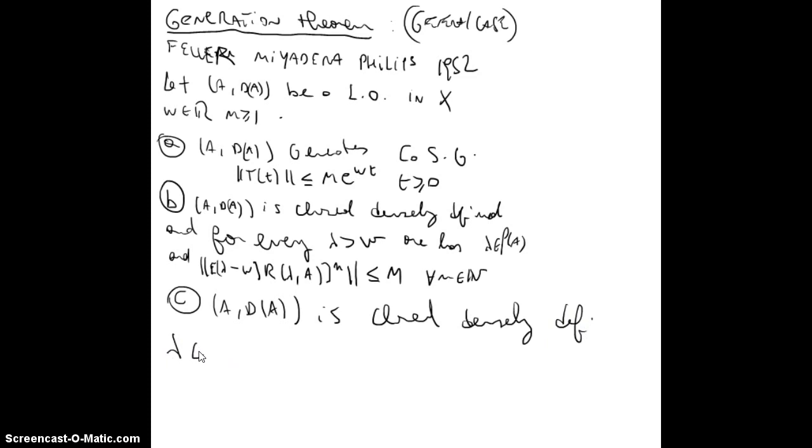And there is an equivalent for the complex numbers that is again closed, densely defined. For every lambda in complex numbers, the real part greater than omega, one has that lambda is in the resolvent set, and the norm of R(lambda, A)^n is less than equal than m over (real part of lambda minus omega)^n. This will be the generalization of the Hille-Yosida theorem. Thank you very much.